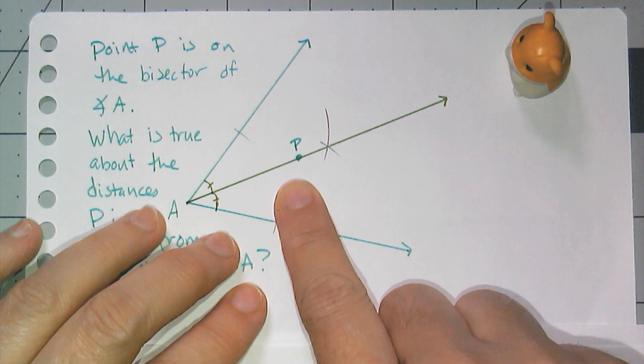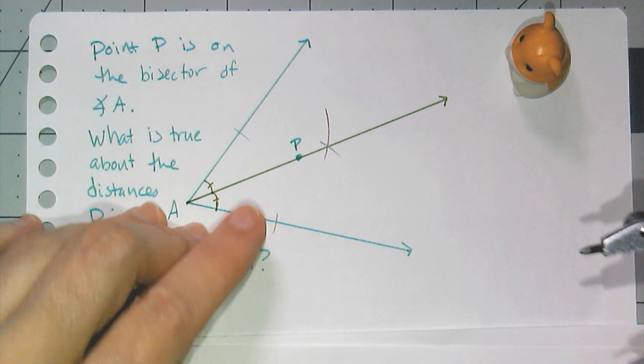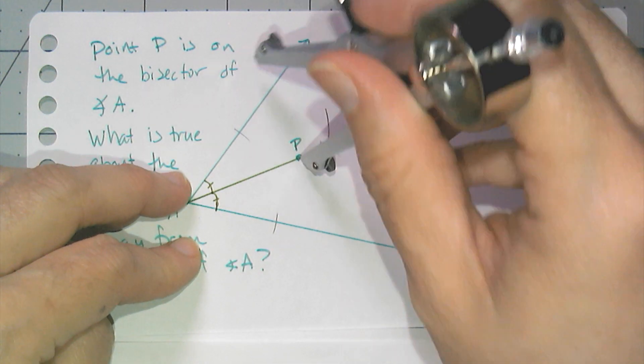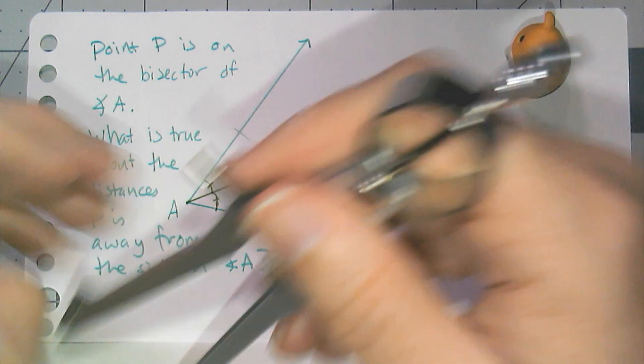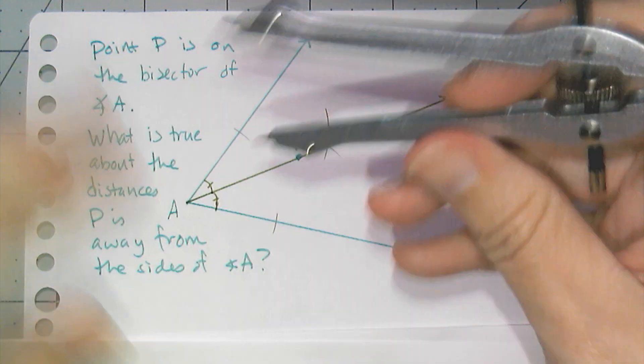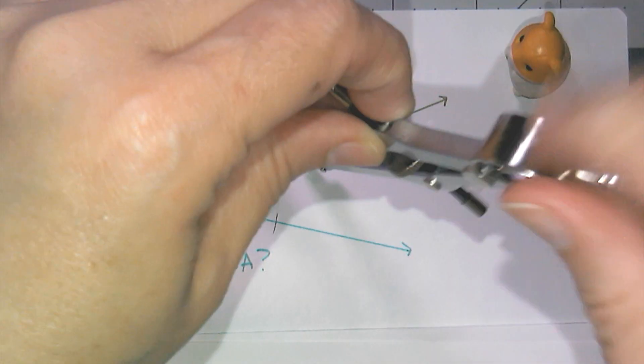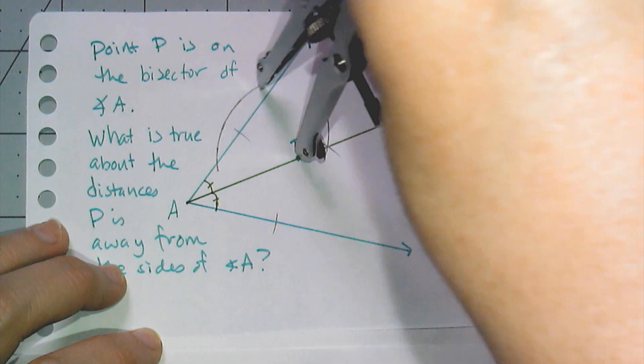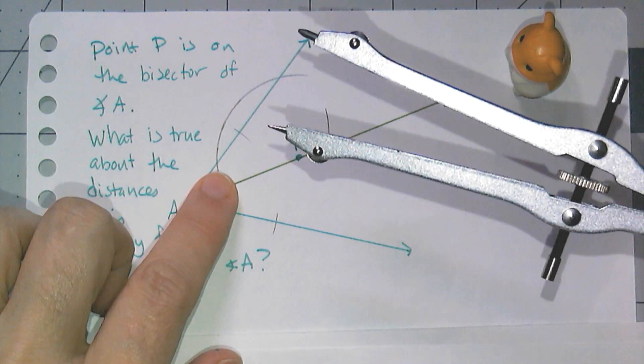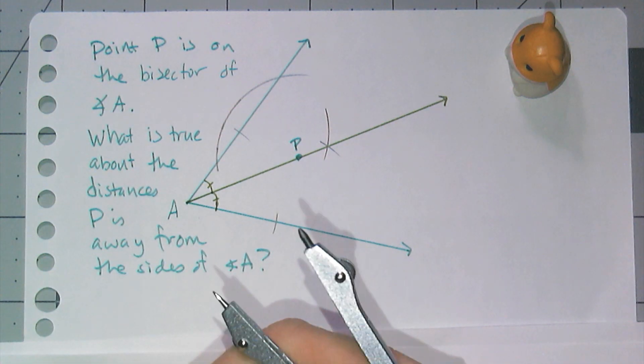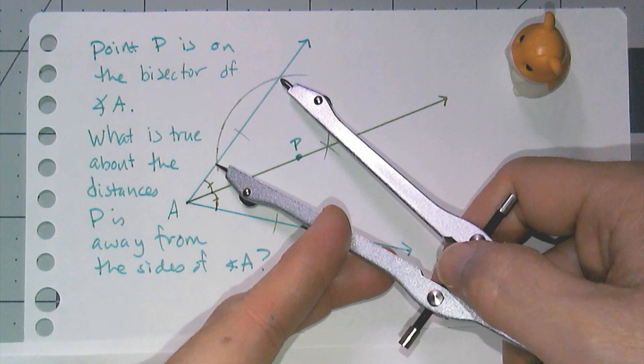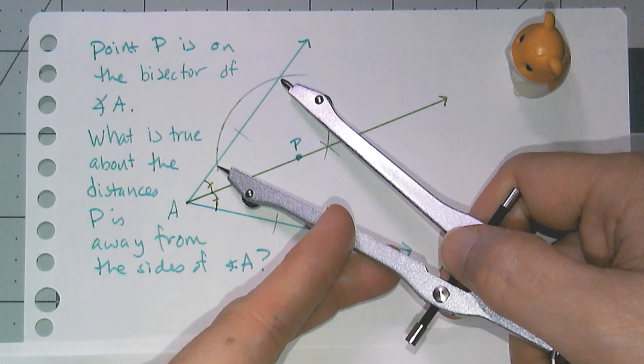So what I could do is construct these perpendicular distances. If you remember how to do that from the shortest distance video, you have to put your compass on the point and you need to choose a radius on your compass that when you strike your arc, you will intersect the point twice. Then your job from there is to construct the perpendicular bisector of the line segment created by those two intersections.